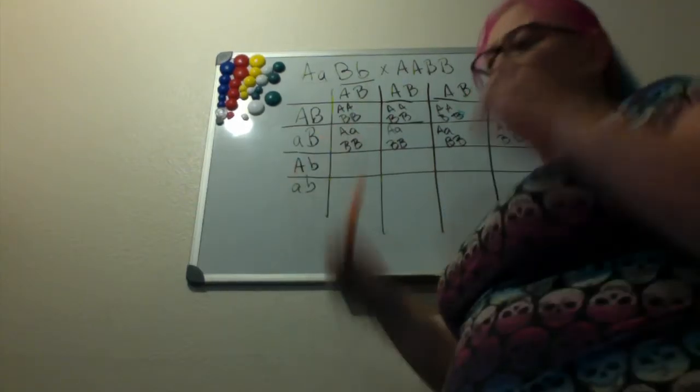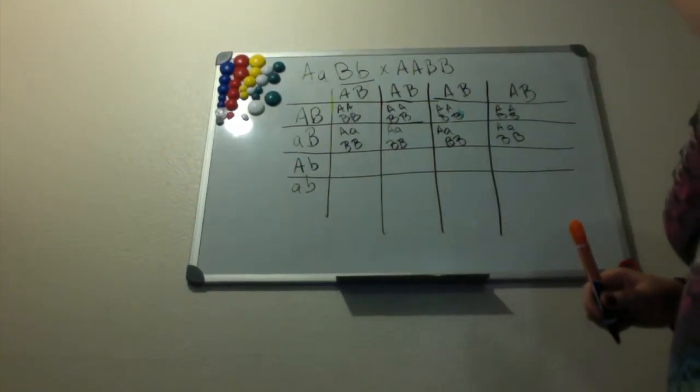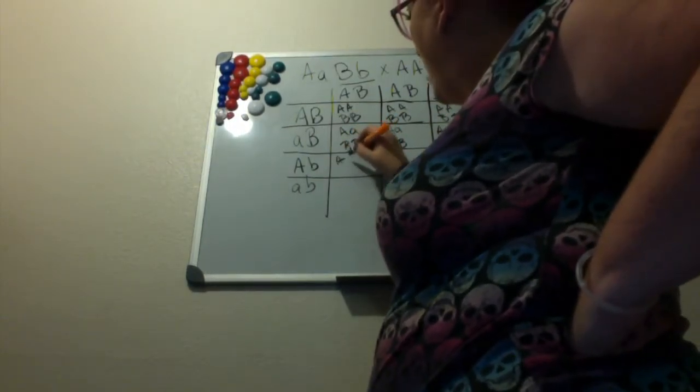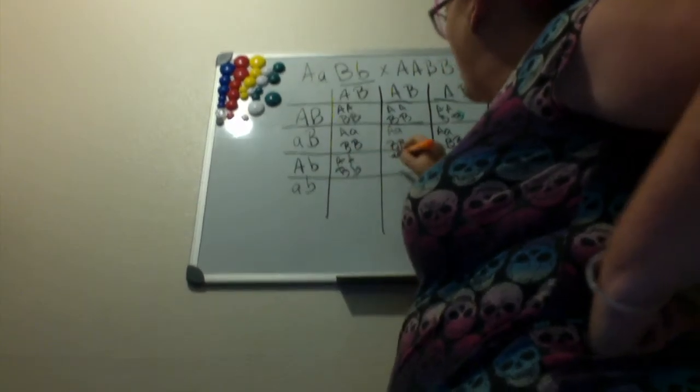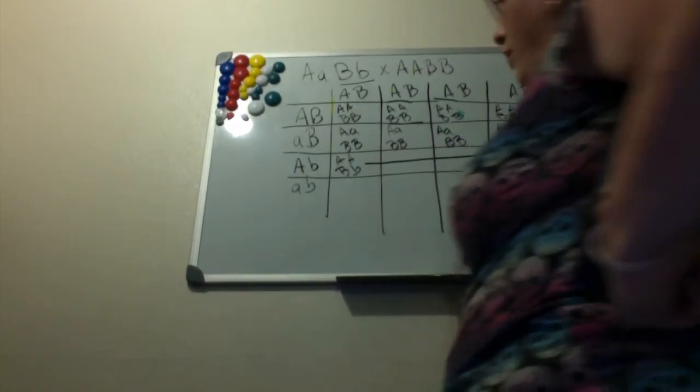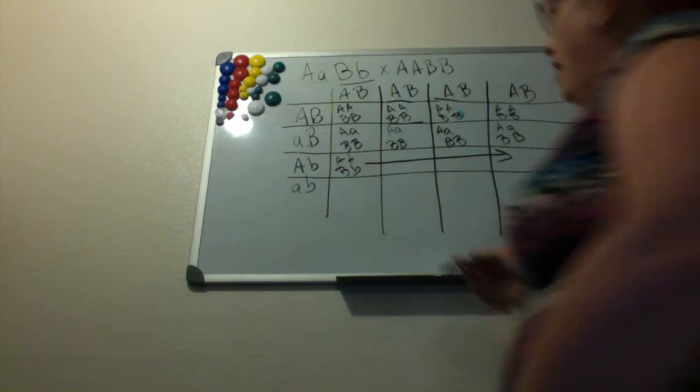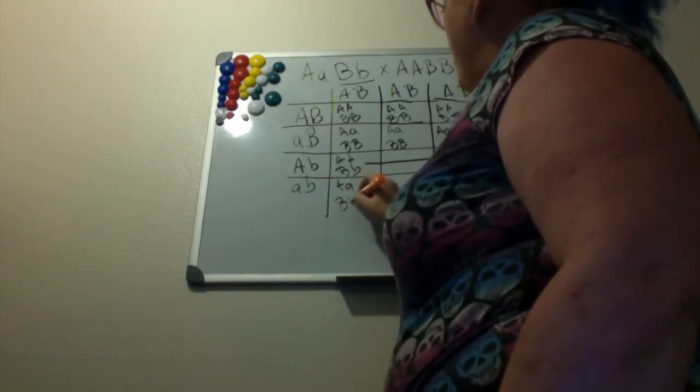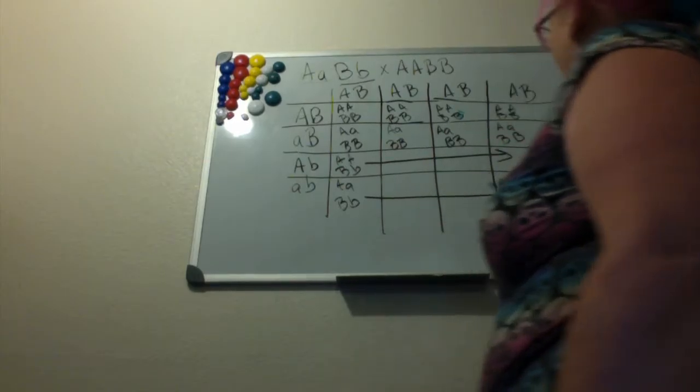On our next one we've got homozygous for A, heterozygous for B, and it's going to be like that all the way across. And on the last one it's just going to be heterozygous for both A and B all the way across.